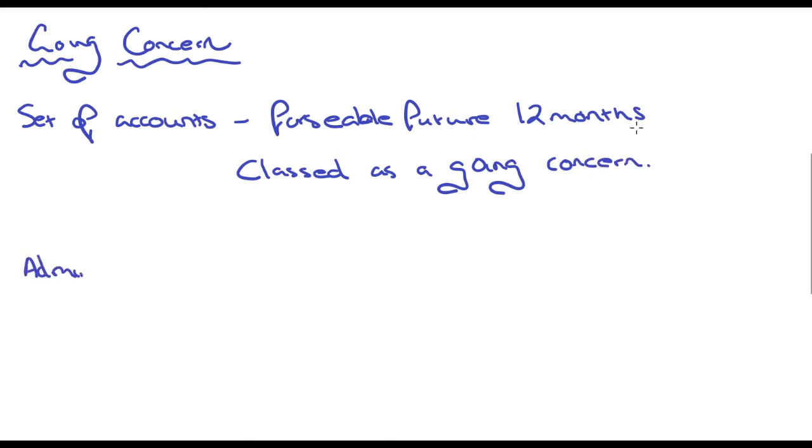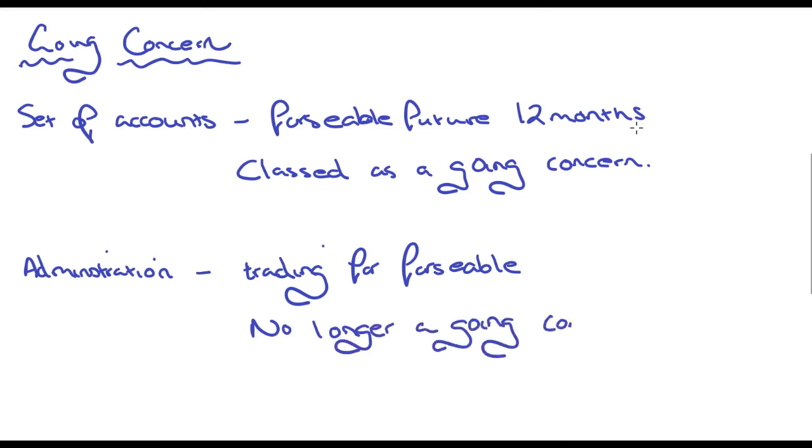However, if I deem that the company is going to be going into administration or there's early warning signs of that, or say the overdraft is ridiculously high and they've got no way of paying their suppliers, so just indications like that, then an auditor might say that they will not be trading for the foreseeable future. You might even have a group of companies who decide that they want to shut down one of their entities. So in that case, that company is no longer a going concern. But what this means is that we need to create an accounting policy note to state in the financial statements if we believe that they are a going concern or not.